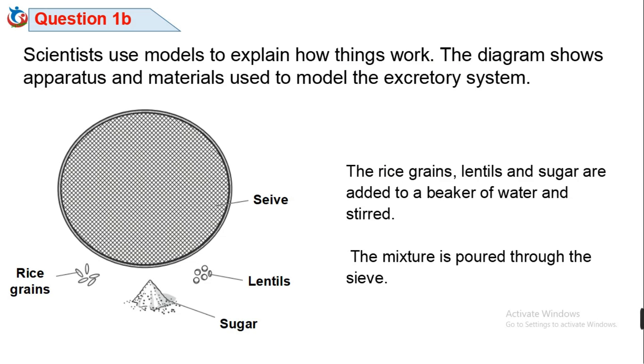Question 1B. Scientists use models to explain how things work. The diagram shows apparatus and materials used to model the excretory system. The rice grains, lentils and sugar are added to a beaker of water instead.